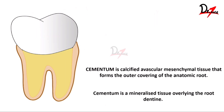Cementum by definition is a calcified avascular mesenchymal tissue that forms the outer covering of the anatomic root. The first part says that it's calcified — that means there are calcium deposits and it is hard. Second, it is avascular, meaning it does not have any vascular supply. While discussing gingiva and the periodontal ligament we spoke about blood vessel supply, but in the case of cementum there is no actual blood supply going to the cemental tissue.